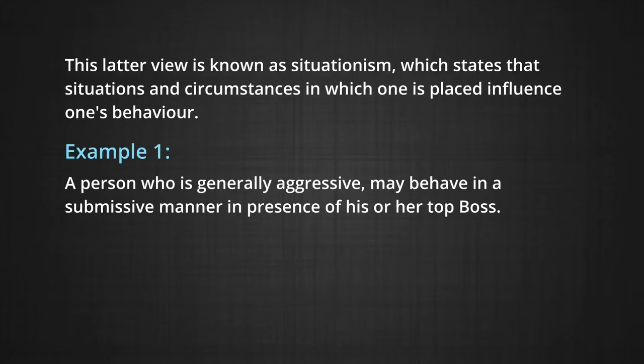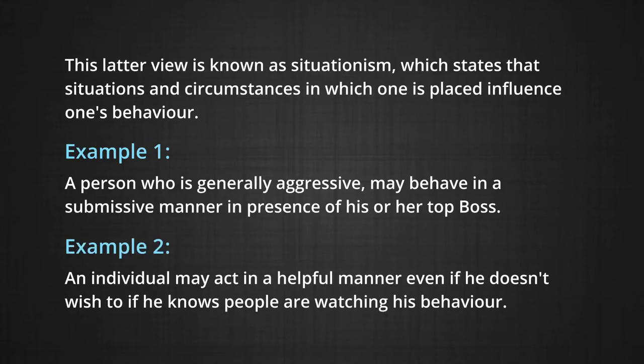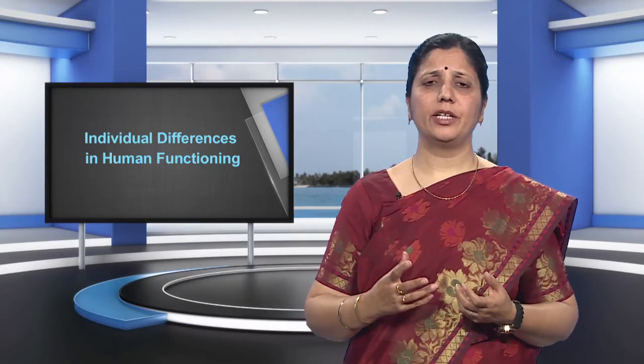For example, a person who is generally aggressive may behave in a very submissive manner in the presence of his or her top boss. Another example: an individual may act in a very helpful manner even if he doesn't wish to be helpful, if he knows that people are watching his behaviour. Sometimes the situational influences are so overpowering that individuals with differing personality traits respond in almost the same way. The situationist perspective views human behaviour relatively more as a result of external factors.